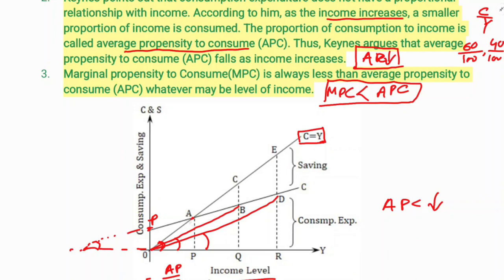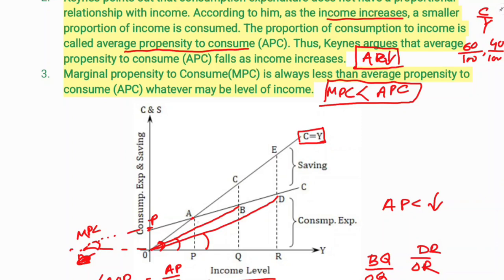The angle AOP equals perpendicular divided by base, that is AP divided by OP. At point B, APC is BQ divided by OQ. At point D, APC is DR divided by OR. MPC is the slope of the consumption line. As shown in the diagram, MPC is always less than APC at every point on the consumption curve.